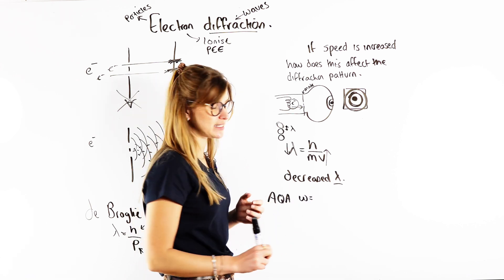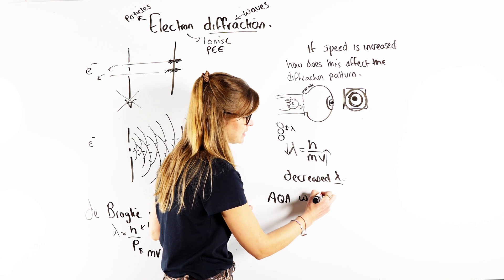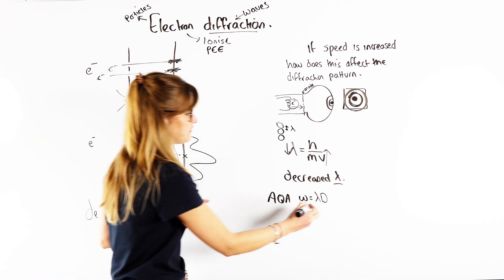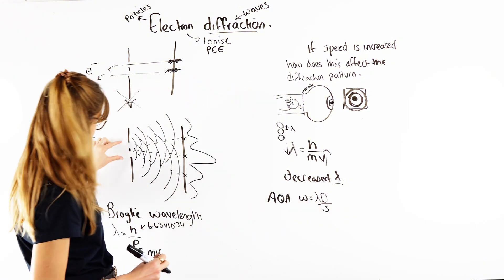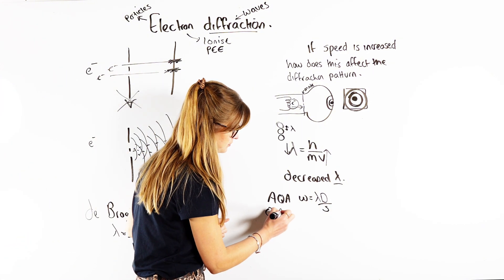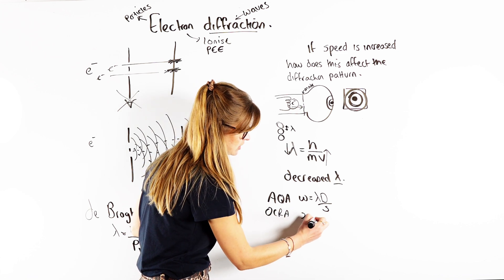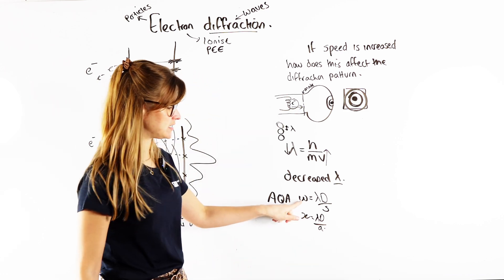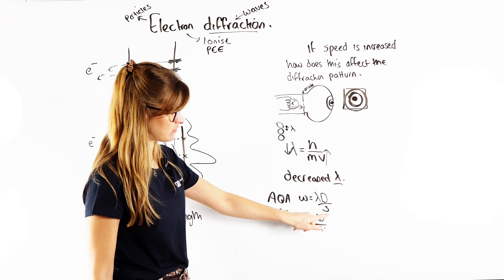So the distance between these two slits. And if we're doing OCR A, you would just write X equals wavelength times D over A. So just the same equation, just instead of writing W, you write X, instead of writing S, you write A. Okay, so we're going to model it for the AQA, but again, if you're doing OCR A, you can see how their symbols are related.